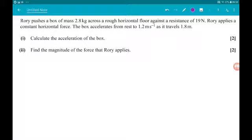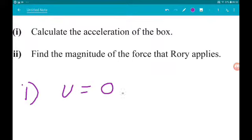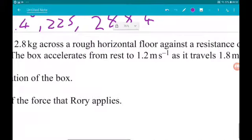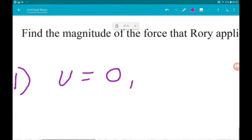We don't care about the mass. We know that originally the box was at rest, so u is 0. We know it accelerates to 1.2 meters a second, so the final velocity is 1.2.